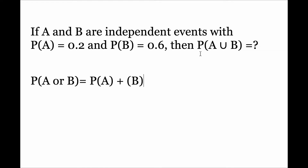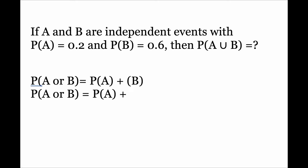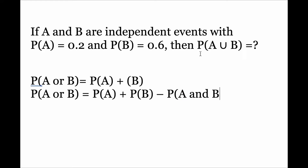The other formula that the rule of addition gives us is: probability of A or B occurring equals probability of A plus probability of B minus probability of A and B occurring. So in order to use this formula, we need to find the probability of A and B occurring.